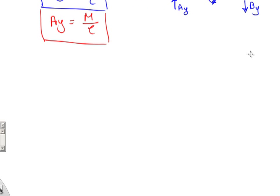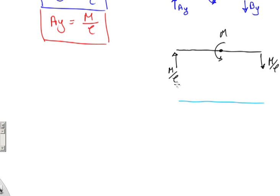AY is M over L acting upward, BY is M over L acting downward, and we have moment M at the mid span. For the shear force diagram, we start pushed up by M over L. There is a bending moment at mid span, but a concentrated moment does not directly affect the shear diagram. Since no transverse forces act along the beam, the shear remains constant at M over L — a straight horizontal line — and the entire shear force diagram is positive.